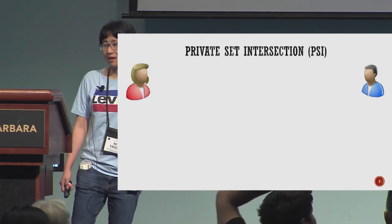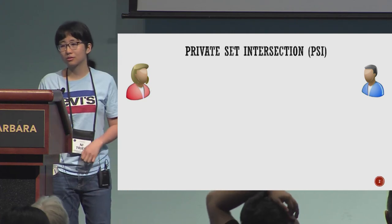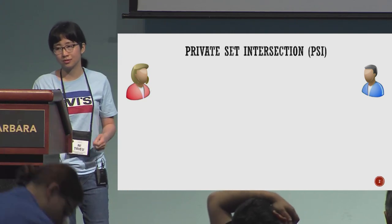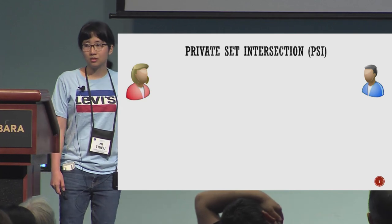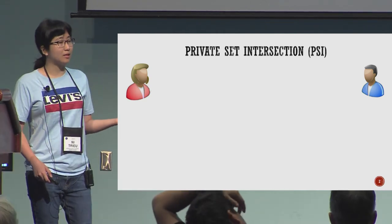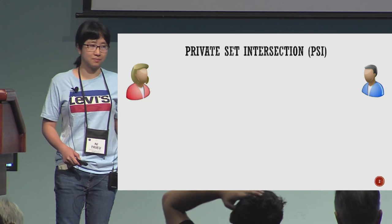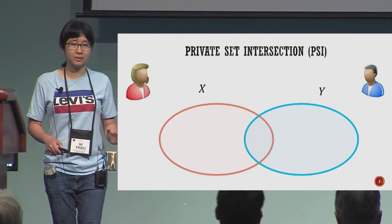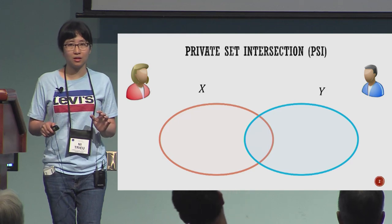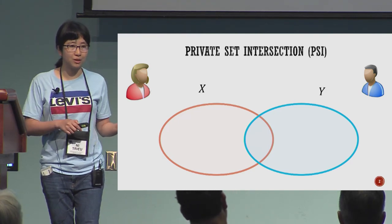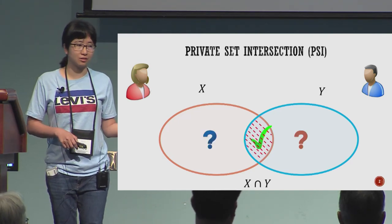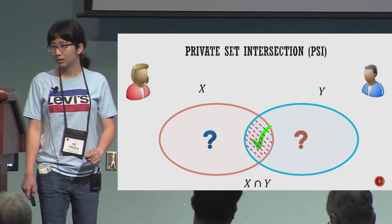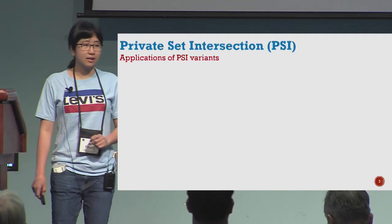Maybe you attended another PSI talk a few days ago and might know what PSI is, but I want to go through a simple scenario. Here we have two parties, Alice and Bob, each with a set of items, and now they want to compute the intersection of their sets without revealing any information except for the intersection.